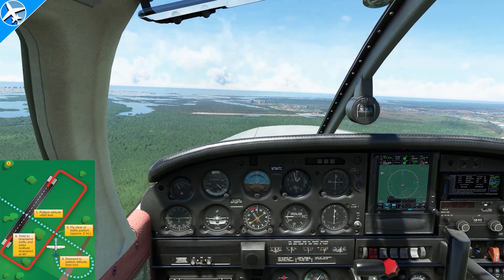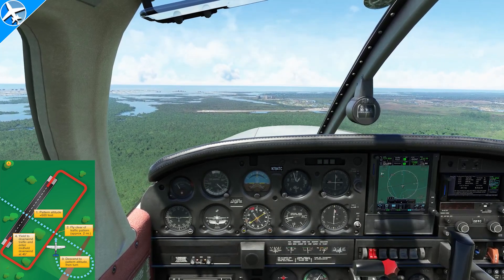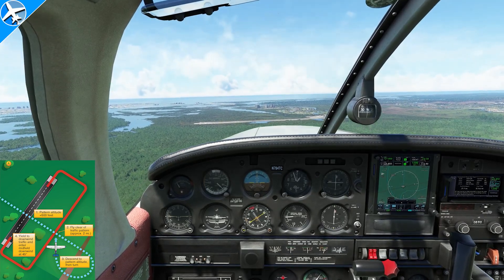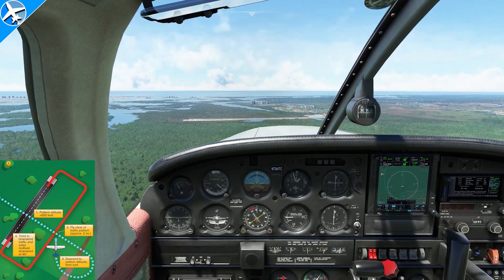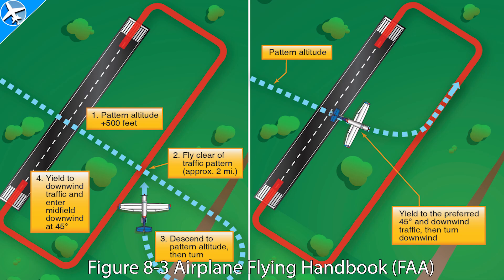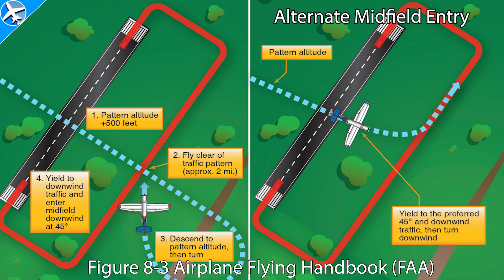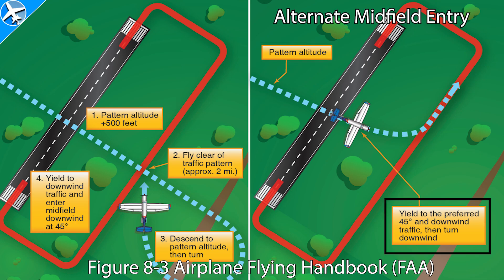This approximate heading would be flown until the aircraft is approximately one half to one mile from the runway, when a right turn would then be made to enter the downwind leg. This type of traffic pattern entry is recommended when the pattern is quite busy. When not busy, the alternate midfield entry method can be used cautiously. One significant difference of this entry type is the aircraft flies over the airport and enters the downwind at pattern altitude, yielding to preferred 45-degree and downwind traffic before turning downwind.